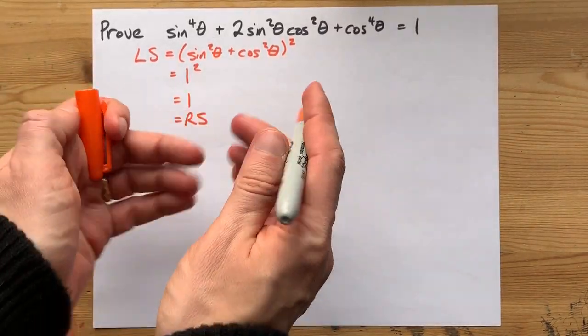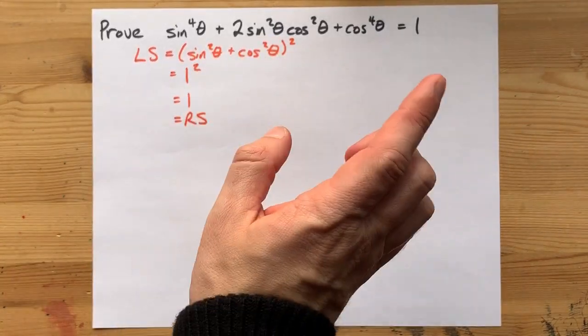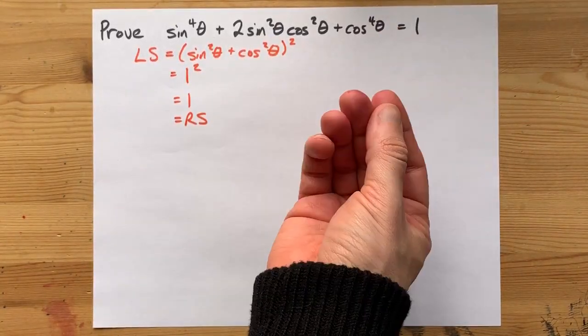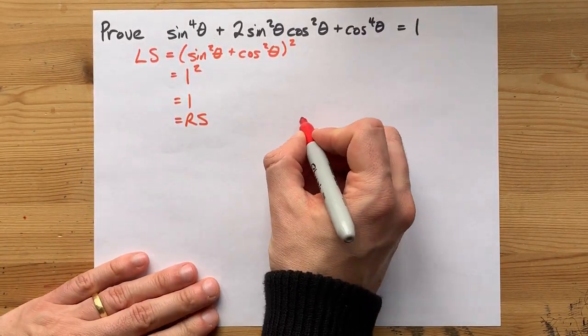Maybe you're really not a fan of that though. Maybe you say I prefer replacing 1s with the Pythagorean identity. Well, don't worry, you can also have done it this way.